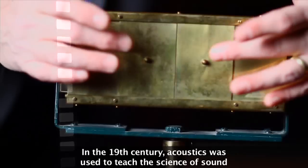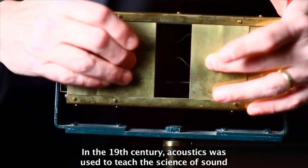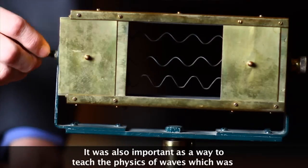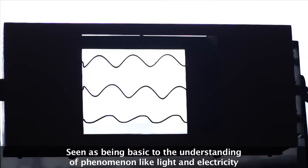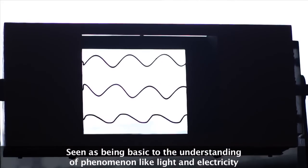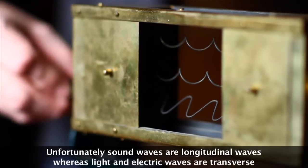The segments projected could be visualized as a line of individual air molecules being moved by sound waves coming from various directions. In the 19th century, acoustics were used to teach the science of sound, but also as a way to teach the physics of waves, which were seen as basic to understanding phenomena like light and electricity.